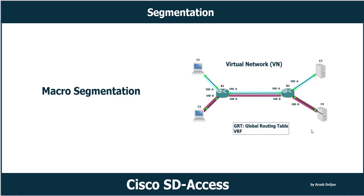For example, in this scenario we have two routers — Router 1 and Router 2 — connected with a physical link. R1 is connected to Computer 1 and Computer 2, and R2 is connected to Server 3 and Server 4. We have one physical network, but we can create two logical networks over this physical network using VRFs, also known as VRF-Lite.